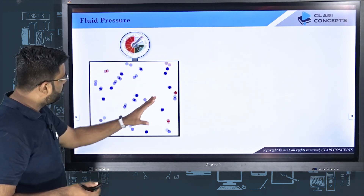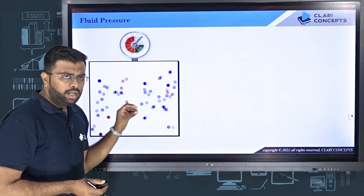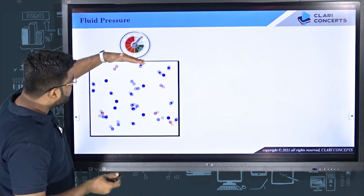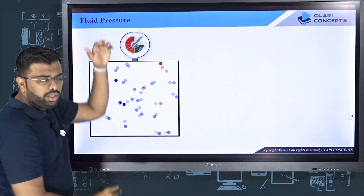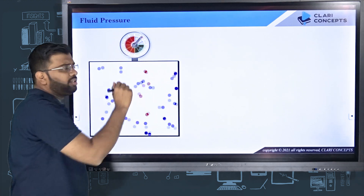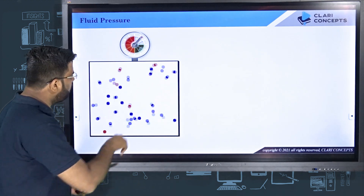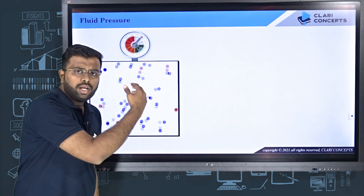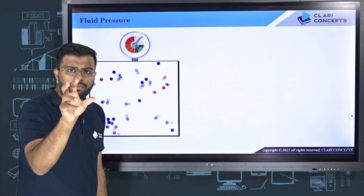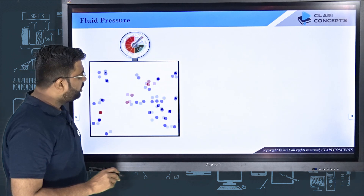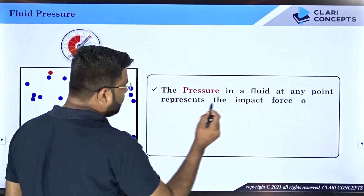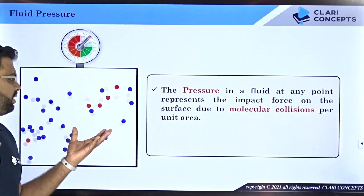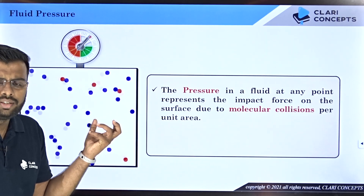At the molecular level, there are a lot of molecules moving here and there. The pressure gauge has a surface which senses the pressure of the fluid. That surface is impacted by molecules of the fluid due to collisions. The pressure the gauge measures is nothing but that impact force. The average number of molecules colliding on the surface of the pressure gauge creates the impact force, and the value of that impact force per unit area is given by the property called pressure.